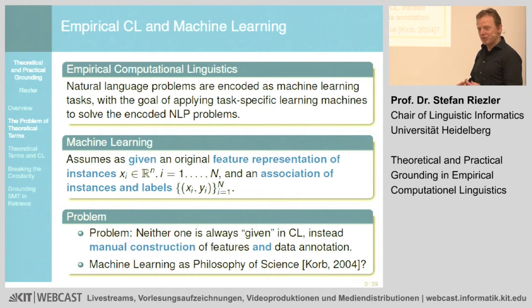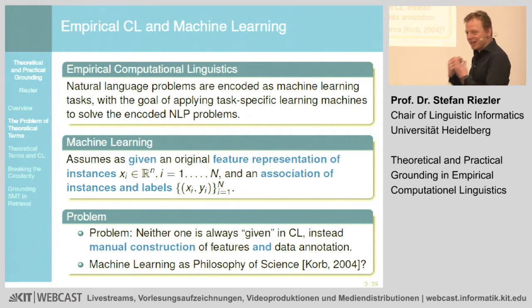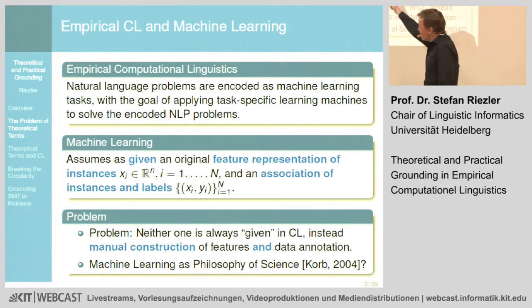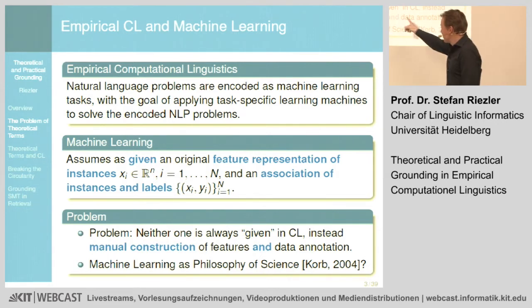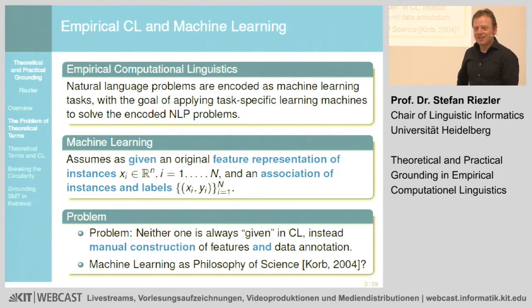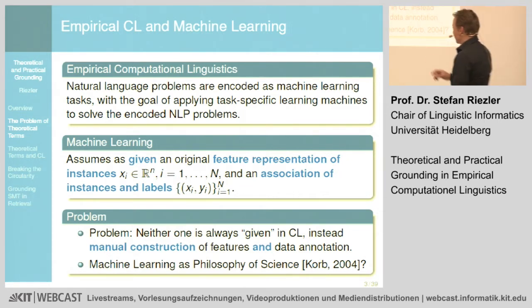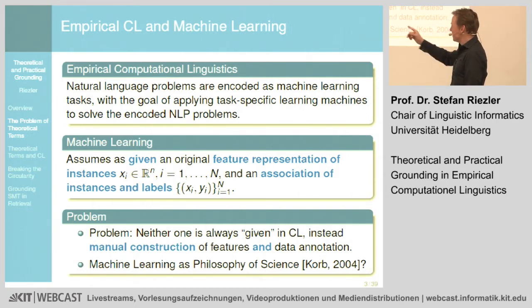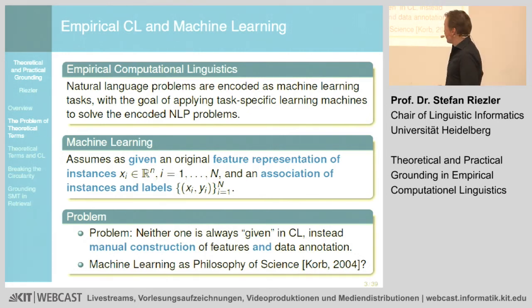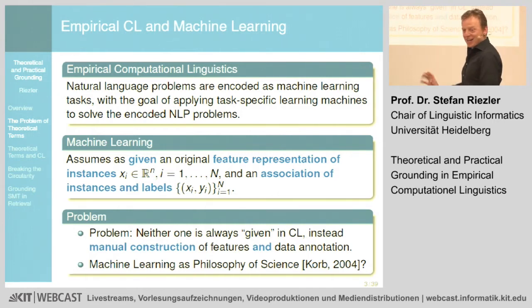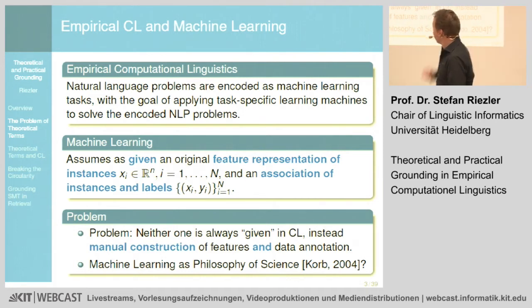You will create your features manually. It's not like in vision, where the pixels are naturally given as image features. And you are not always given instances and labels — people sit down and annotate the data by hand. So that's an important difference. My question is: can we really do what people like Kevin Corp suggests, namely take machine learning as philosophy of science for computational linguistics? I would say you have to be careful, because of this manual data annotation issue.